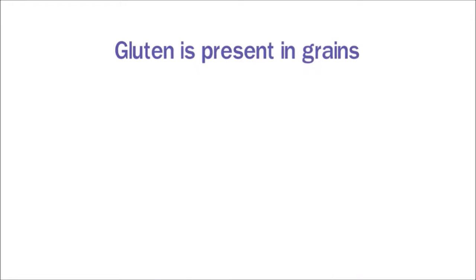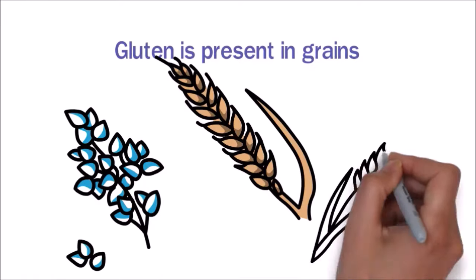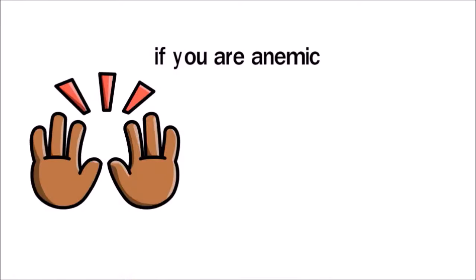Gluten is present in grains such as rye, wheat, and barley. So if you are anemic, avoid eating gluten-rich foods.